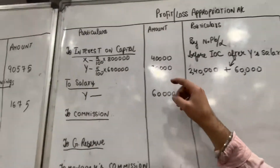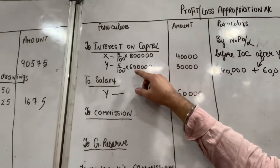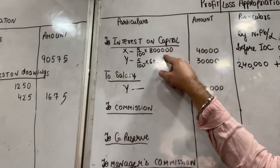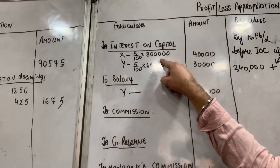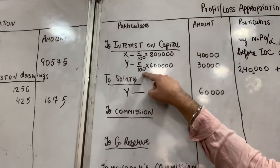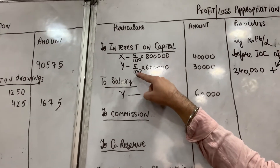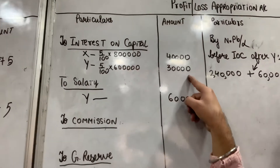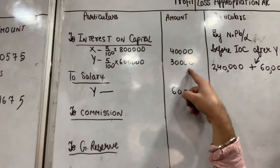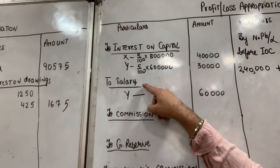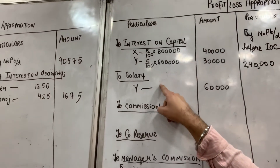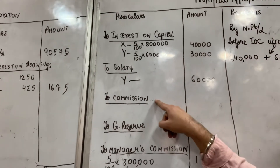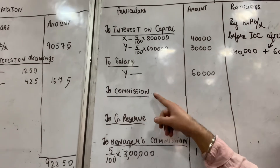The interest on capital rate is 5%. X's capital is 8,000,000 — so 5% of X's capital. Y's capital is 6,000,000 — 5% of Y's capital. The figures come to approximately 40,000,000 and 3,000,000. The P&L appropriation salary is 600,000.